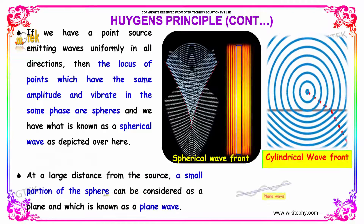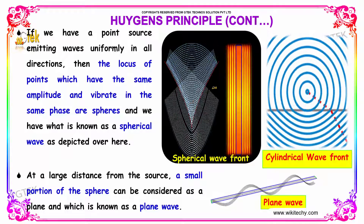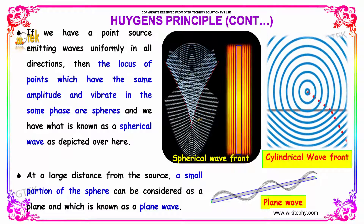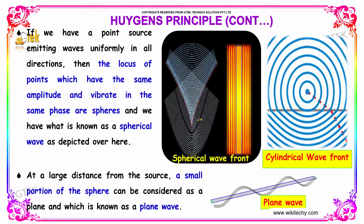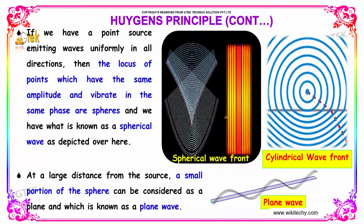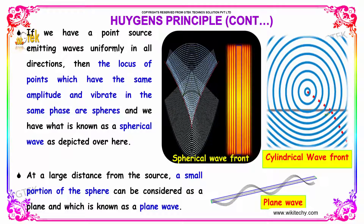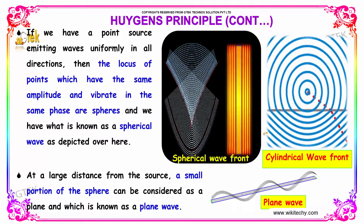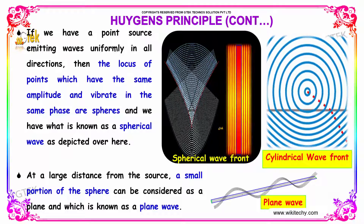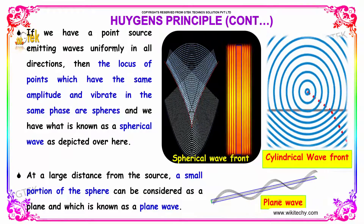If we have a point source emitting waves uniformly in all directions, the locus of points which have the same amplitude and vibrate in the same phase are called spheres, giving us what is known as a spherical wavefront. This is a spherical wavefront, and this indicates the cylindrical wavefront. At a larger distance from the source, a small portion of the sphere can be considered as a plane, which is known as a plane wave.